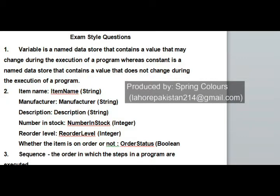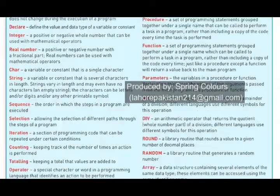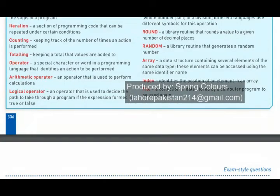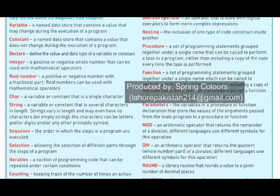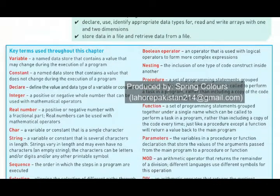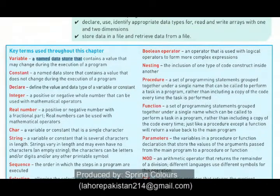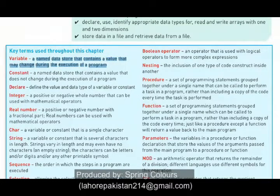I have taken the answer from your book. These are the two definitions of variables and constants given on page number 336 of your book. A variable is a named store that contains a value that may change during the execution of a program — it is an empty space you allocate inside your memory, and during execution you save your answers or values into that empty space.